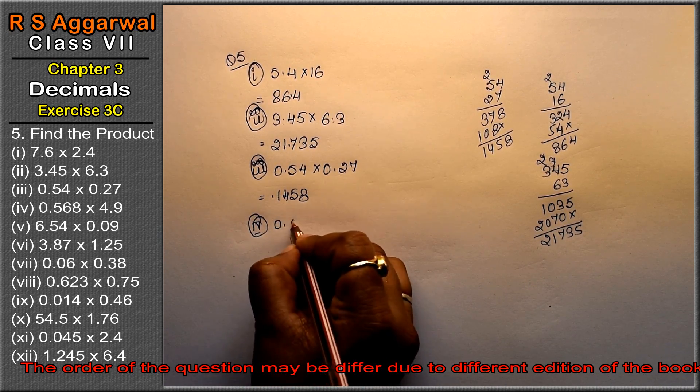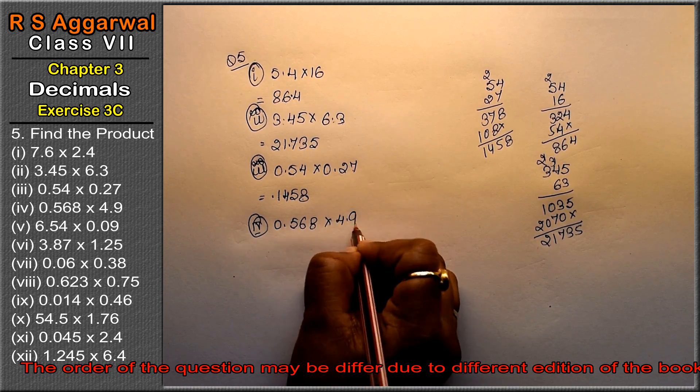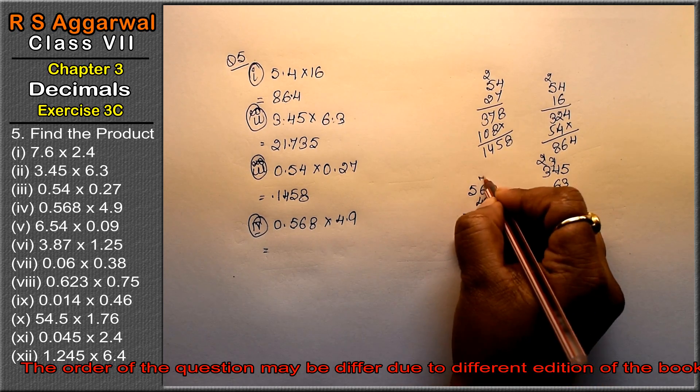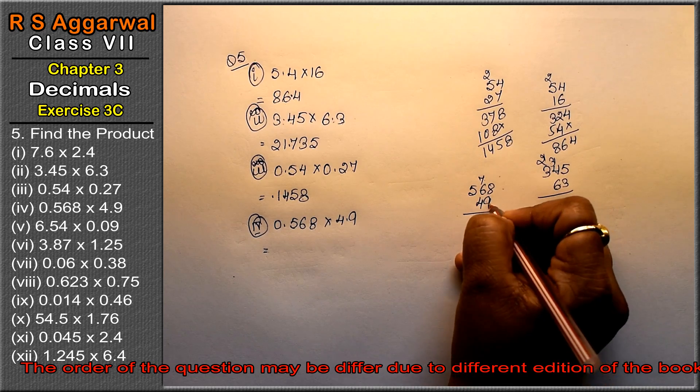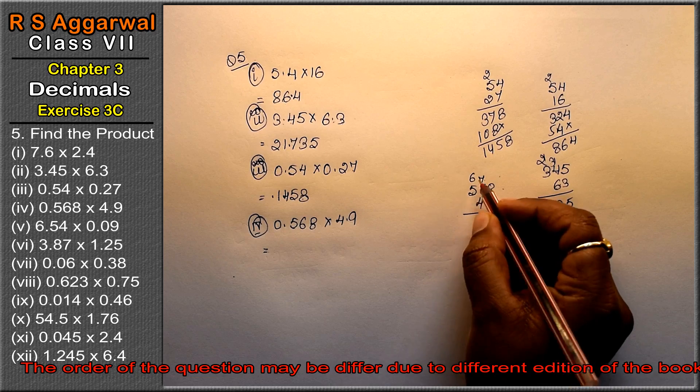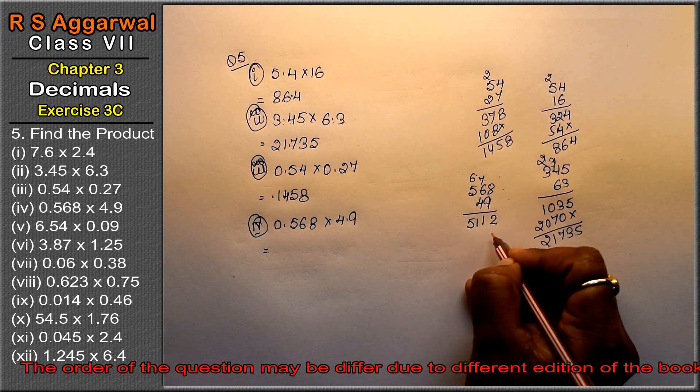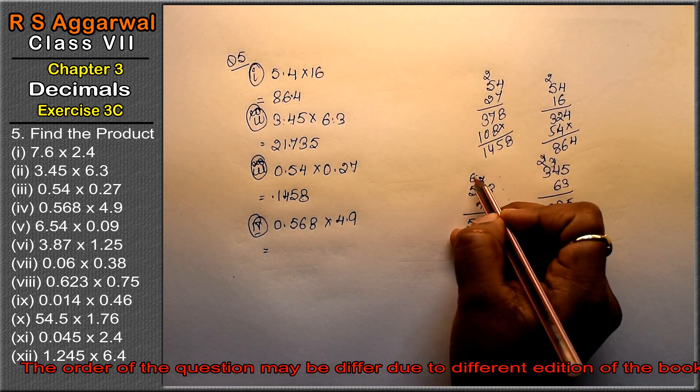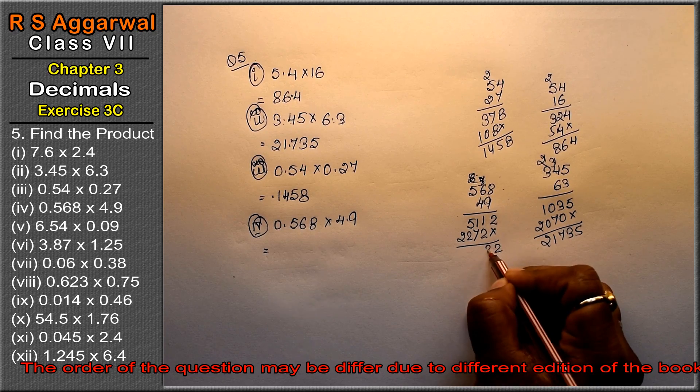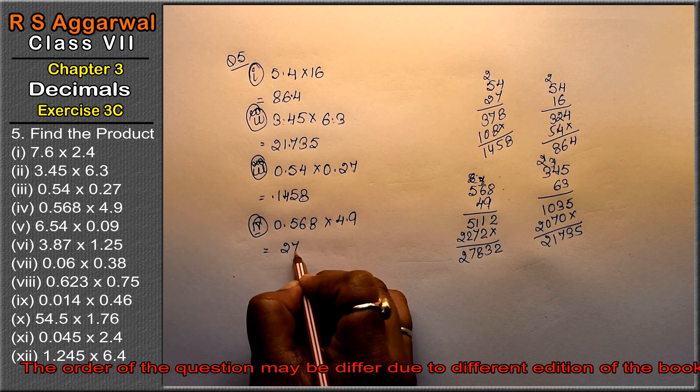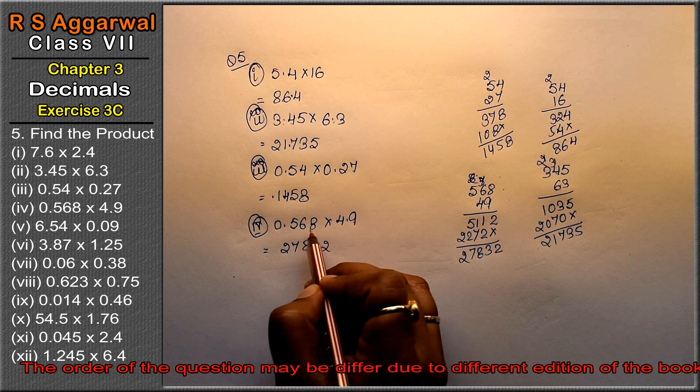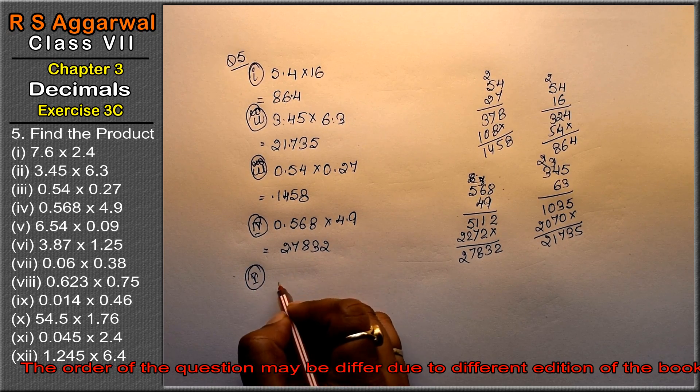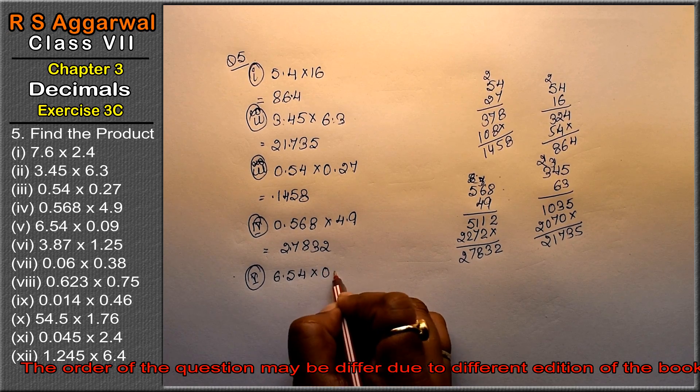Let's do fourth part: 0.568 into 4.9. Multiply 568 and 49. 9 times 8 is 72, carry. Continue multiplying to get first row. Then 4 times 8 is 32, 4 times 6 is 24, 4 times 5 is 20. Add the rows: 27832. Point after how many places? 3 plus 1 is 4, so the answer is 2.7832.